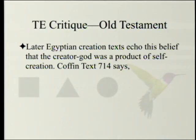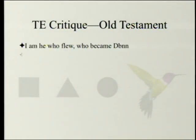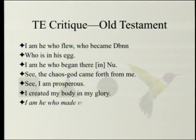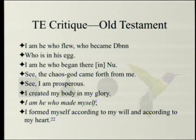Coffin Text 714 says: 'I am new, the one with no equal. I came into being on the great occasion of the inundation when I came into being. I am he who flew... who is in his egg. I am he who began there new. See the chaos God come forth from me. I am prosperous. I created my body and my glory. I am he who made myself. I formed myself according to my will and according to my heart.' So Egyptians had a self-made God.